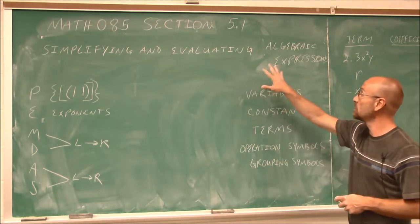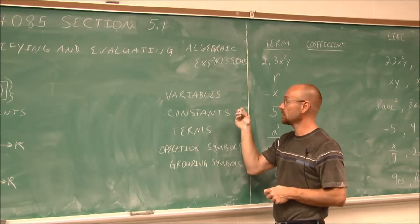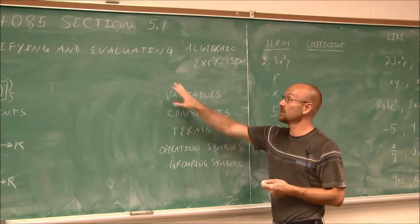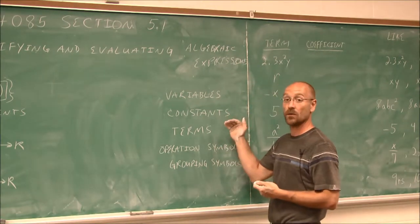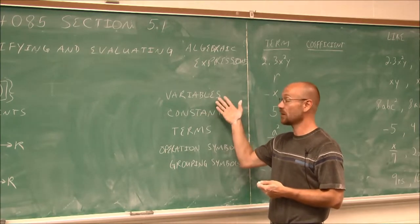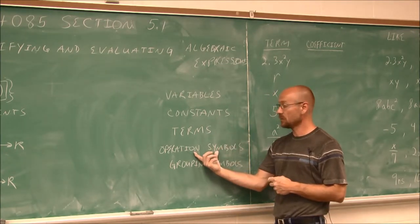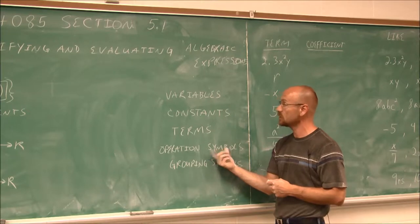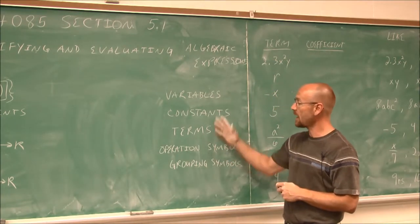Before we actually begin simplifying or evaluating algebraic expressions, we're going to do a little bit of review. We have to know what a variable is — a variable is just a placeholder of an unknown value that maybe we'll know when we're given something to evaluate. We also have constants, which are just numbers that we do know that are not going to change — that's why we call them constant. And terms are the combination of numbers and variables raised to particular powers — the term is the product of numbers and variables. We'll also see operation symbols that tell us whether we're going to raise to a power, multiply, divide, add, or subtract. And we're also going to see grouping symbols — those parentheses, or maybe even absolute values, things of that nature.